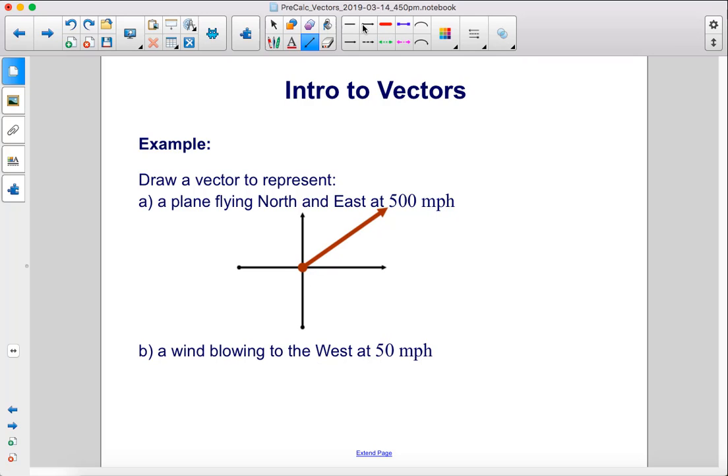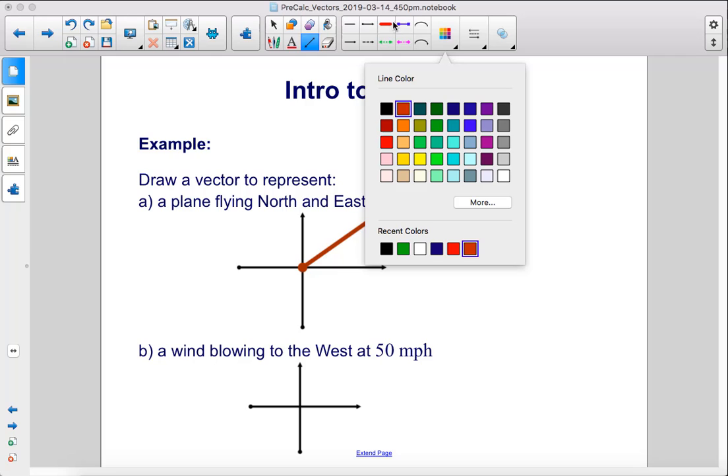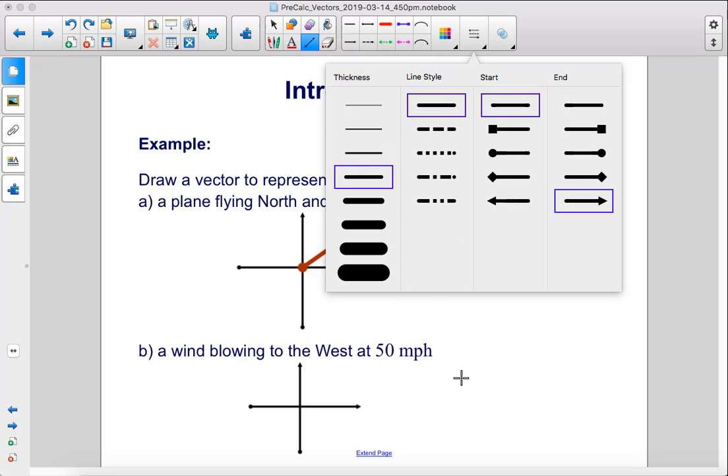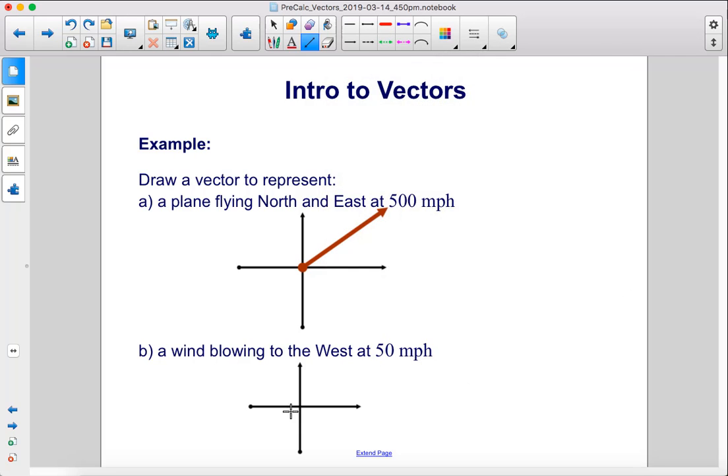Now a wind blowing to the west, so let's draw north, and we have east going this way. So our new vector is going to be going to the west at 50 miles per hour. If this length here is 500, I'll make this length shorter. So our new vector looks like that.